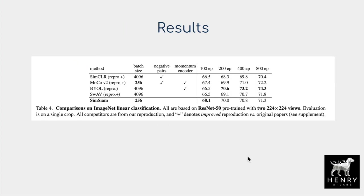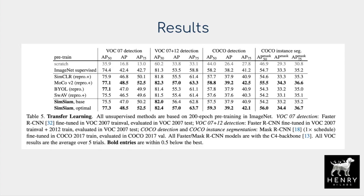This table compares the simple Siamese architecture with SimCLR, MoCoV2, Bootstrap Your Own Latent, and SWAV. They all perform about the same across different training lengths, with checks indicating whether negative samples or momentum encoders are used. The simple SimSiam network performs just as well as the others, which is really surprising.